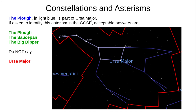The Plough, shown here in light blue, is part of a larger asterism, Ursa Major, which you don't need for the GCSE. If you're asked to identify this asterism, you may say the Plough, the Saucepan, or the Big Dipper, but not Ursa Major.